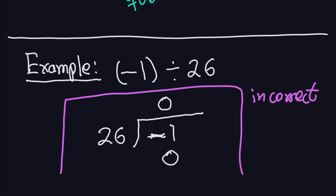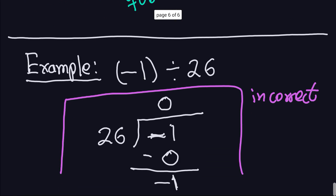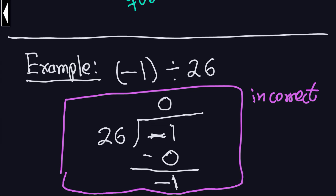You subtract: negative one minus zero gives negative one. So the remainder would be negative one. But the division algorithm says the remainder must be positive — that is not the case here. So a quotient of zero is not valid; it goes against the intuition that 26 goes zero times into negative one. Let me mark this as incorrect.